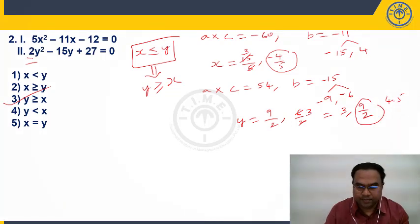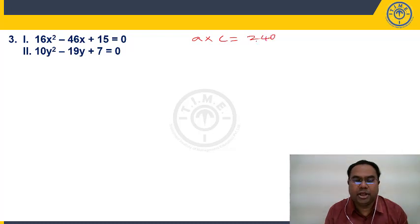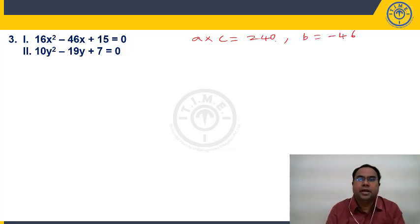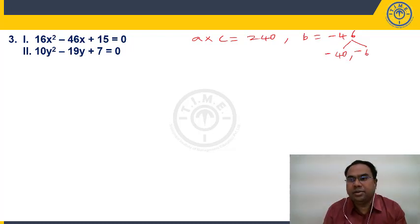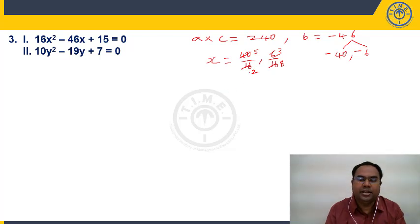Question 3: 16X² − 46X + 15 = 0. A×C = 16×15 = 240, B = −46. A×C positive, write B as sum of two numbers with product 240 and sum 46: use 40 and 6. Since B is −46, take −40 and −6. Change signs: −40 becomes +40, divided by 16 = 5/2. −6 becomes +6, divided by 16 = 3/8. Roots of X: 5/2, 3/8.